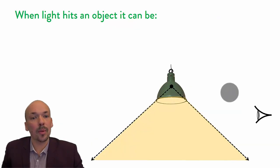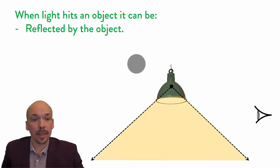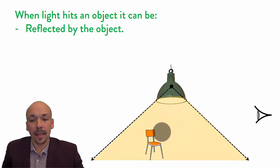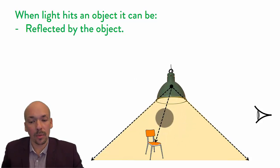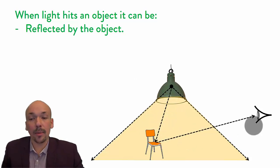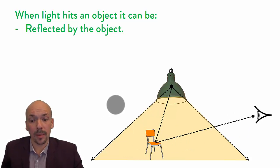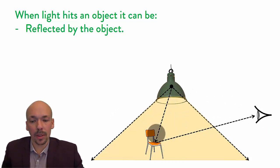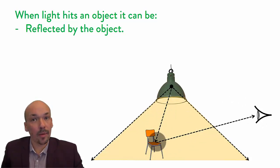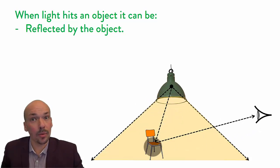There are three things that can happen when light hits an object. Here we have a light source, and if light hits an object it can be reflected. If we have a chair here, some light from the light source will hit the chair and be reflected — it can go to your eye, or to the left where another person might see it. Most importantly, it's reflected and then you can see the chair. The chair itself is not making light; it's reflecting the light from the light source. When that reflection hits your eye, you can actually see the chair.